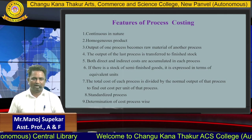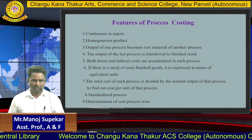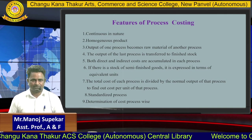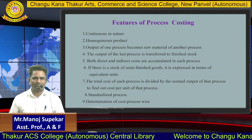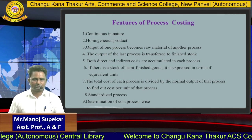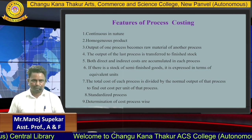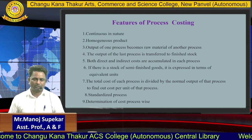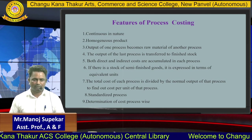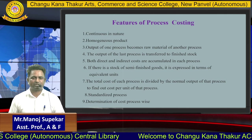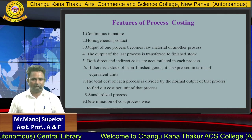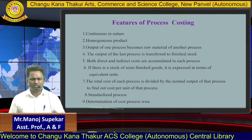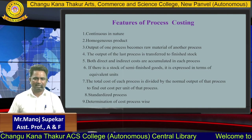Both direct and indirect costs are considered in process costing. If there is a stock of semi-finished goods, it is expressed in terms of equivalent units. Process costing also considers equivalent units and accounts for normal output. The main feature is a standardized process through which goods are manufactured to find out the manufacturing cost accurately and in qualitative terms. The most important feature is to determine the cost of each process step by step. These are the salient features of process costing.